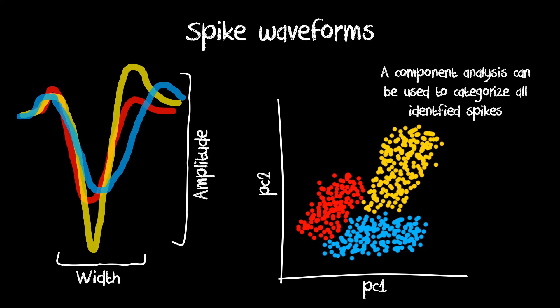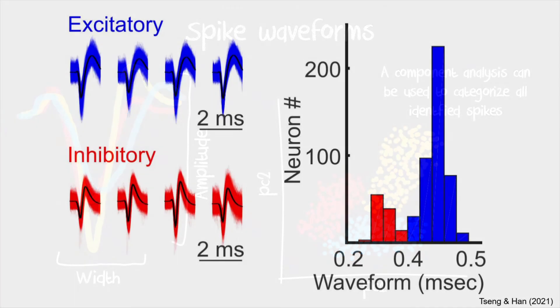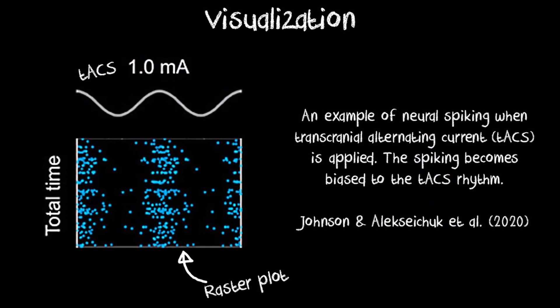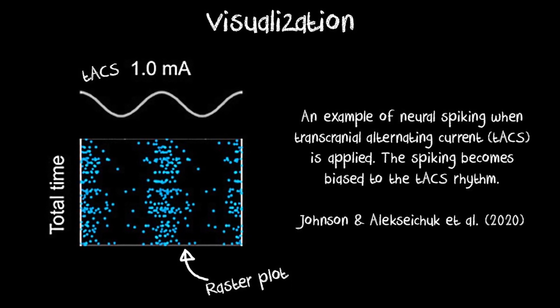Additionally, the exact shape of the waveform can tell us something about which cell type may have been active. For example, inhibitory and excitatory cells tend to have different spike waveforms. As soon as all the data is analyzed, it can be displayed in so-called raster plots. Here we can see how neural spiking changes as a function of time.